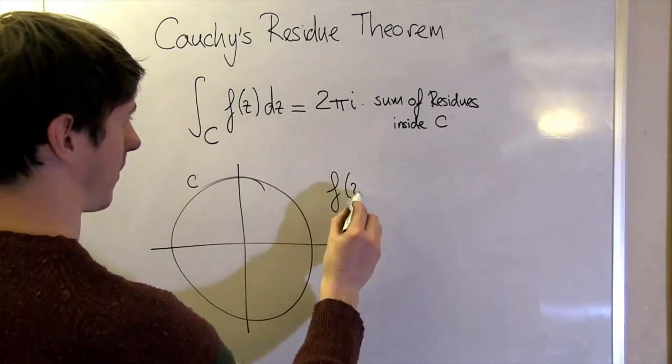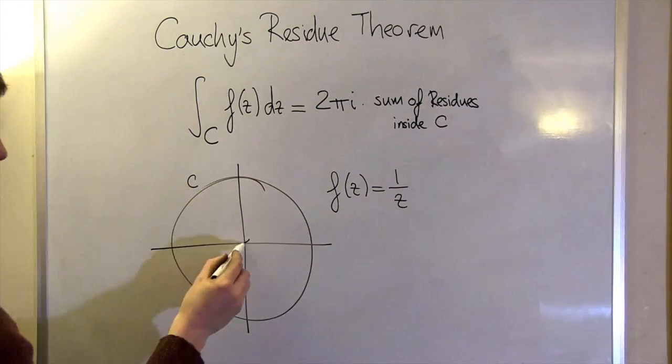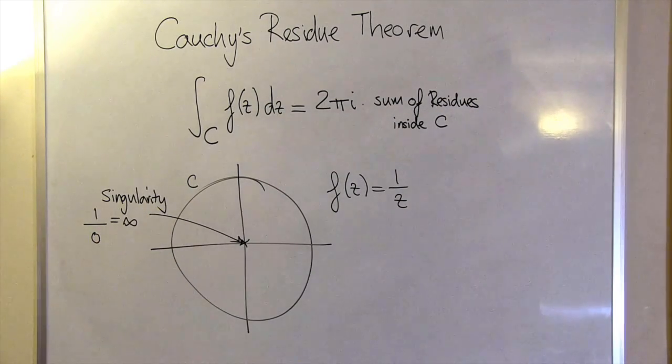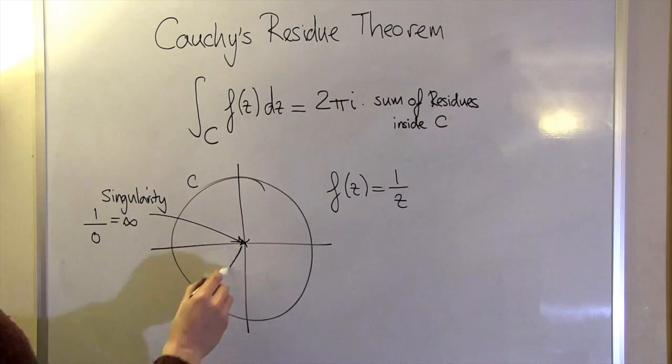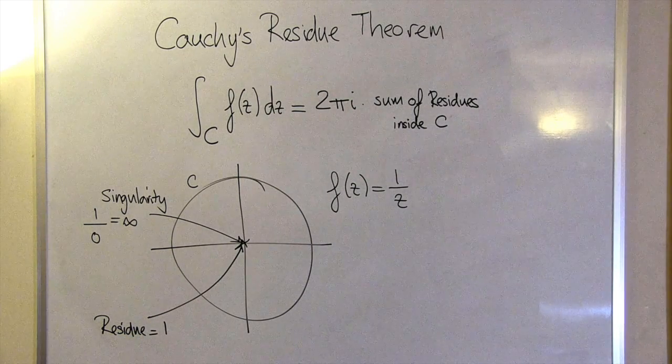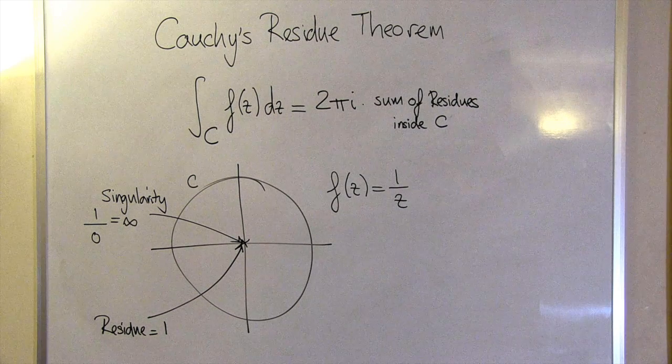For example, in our case we had a singularity at the origin. When z is equal to zero, we have one over zero, which is equal to infinity. The residue of this singularity happens to be one, and so the value of the function around the contour C is 2 pi i, just like we showed.